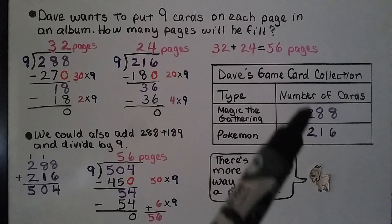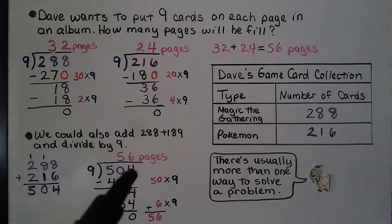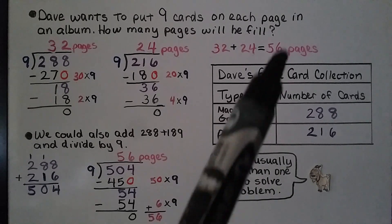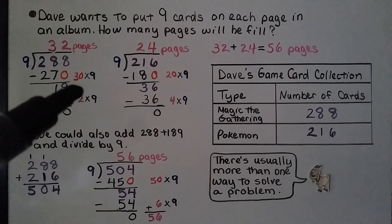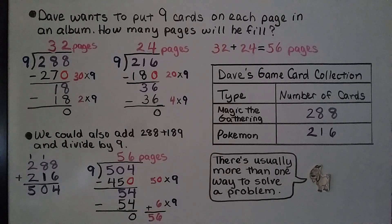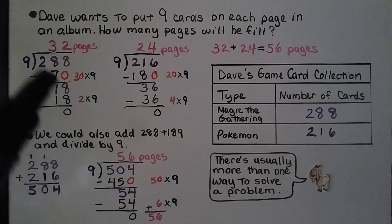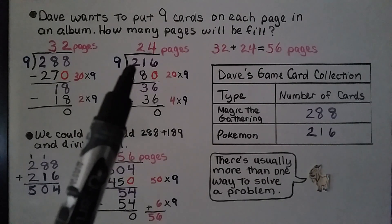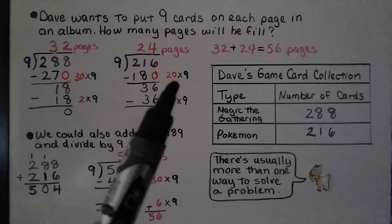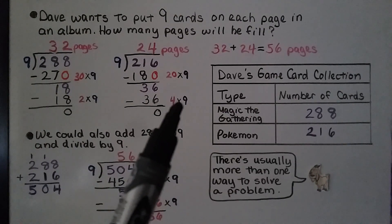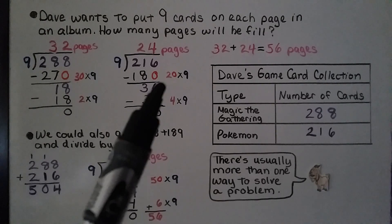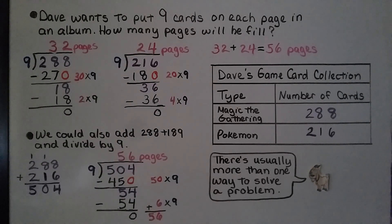Or we could add 288 and 216 together to get 504, then do 504 divided by 9, and get the same number of pages. For 288 ÷ 9: 9 times 3 is 27, so 30 times 9 is 270. Subtracting gives 18, and 2 times 9 is 18, so we subtract and get 0. The partial quotients are 30 and 2, giving 32 pages. For 216 ÷ 9: 9 times 2 is 18, so 20 times 9 is 180. Subtracting gives 36, and 4 times 9 is 36. Partial quotients are 20 and 4, giving 24 pages. Adding 32 plus 24 equals 56 pages total.